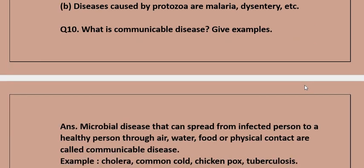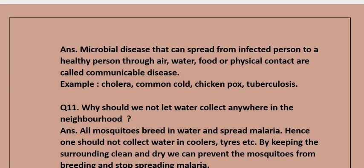Question 10: What is a communicable disease? Give examples. Answer: Microbial diseases that can spread from an infected person to a healthy person through air, water, food, or physical contact are called communicable diseases. Examples: cholera, common cold, chickenpox, tuberculosis.